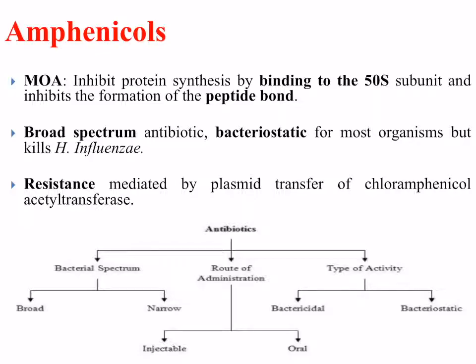Resistance for the amphenicols is mediated by plasmid transfer. As discussed in Lecture 1, plasmids can be transferred by conjugation from one bacterium to another, and they often carry resistance genes to specific antibacterial drugs. Chloramphenicol resistance is mediated by the coding of an enzyme called chloramphenicol acetyltransferase, which is able to modify and disable the chloramphenicol.